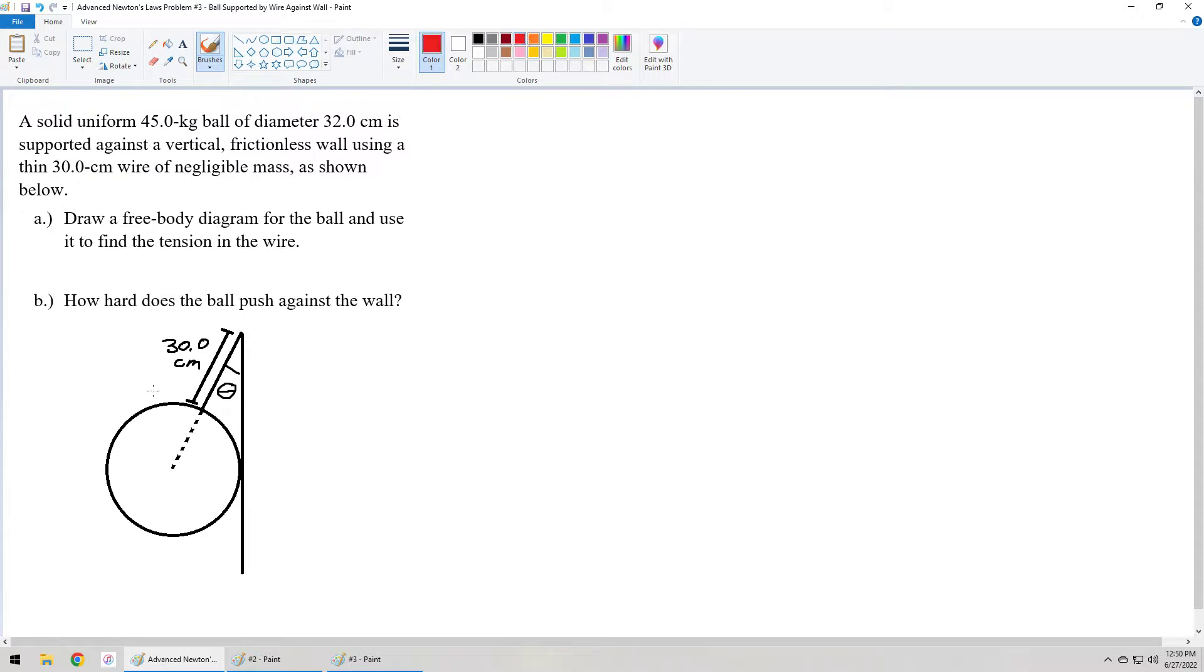Notice the picture has drawn this dotted line here on the sphere, or the ball. I'm going to call that R, the radius. What is the radius? Well, the radius is equal to the diameter of the ball divided by 2. So 32 cm cut in half is 16. So we have a length of 16 here equals 16 cm right there.